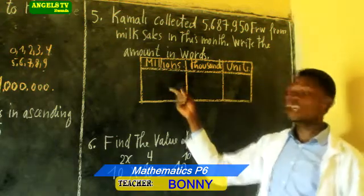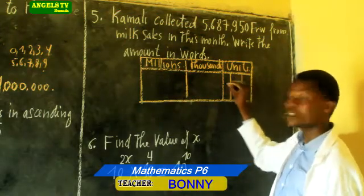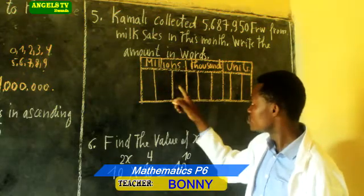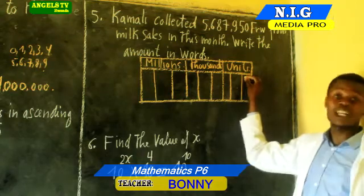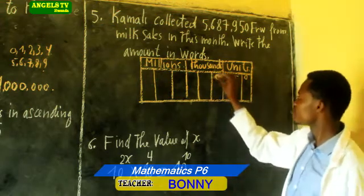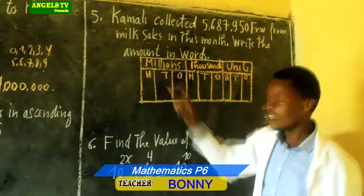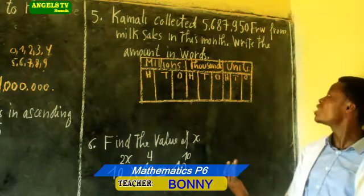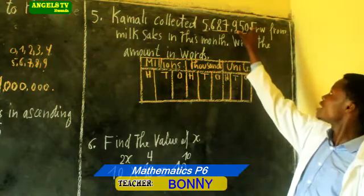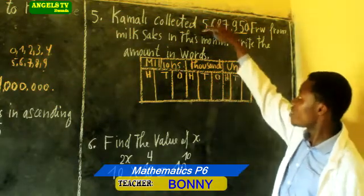Each column we divide into three sub-columns: ones, tens, hundreds. So we have three groups. We write this number in the column of units — 9, 5, 0. We write this number in the column of thousands — 7, 8, 6. And this number in the column of millions — 5.